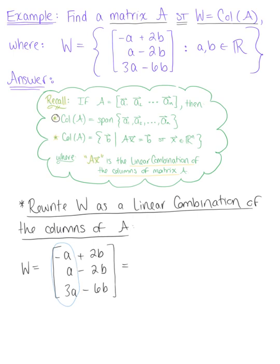So factoring this out of our first column vector here, we have A multiplied by the constant vector negative 1, 1, 3.